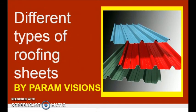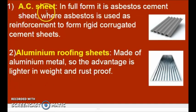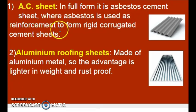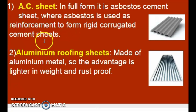Now, let us look into different types of roofing sheets. The first one is AC sheet. AC stands for Asbestos Cement Sheet, in which asbestos is used as reinforcement material with cement to form rigid corrugated cement sheets.